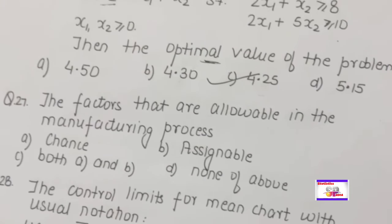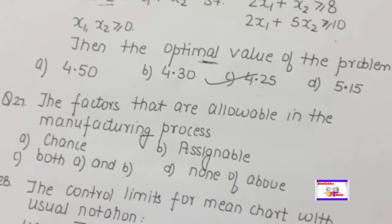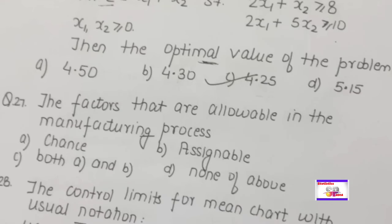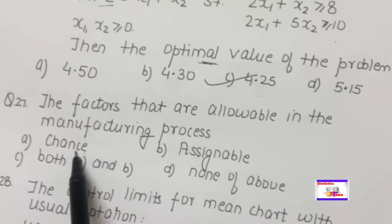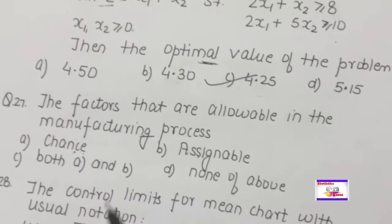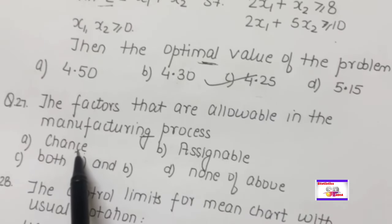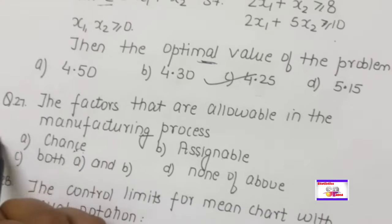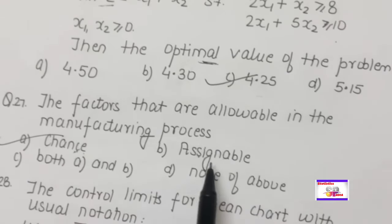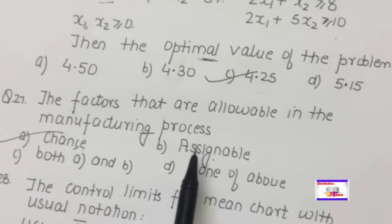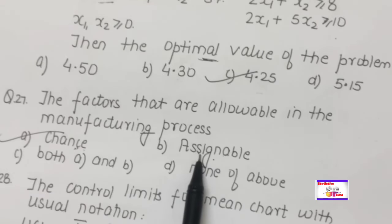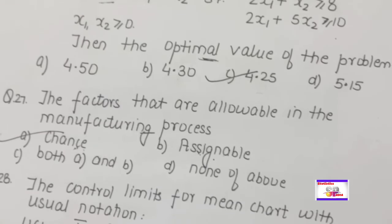In Statistical Quality Control (SQC), factors allowable in manufacturing processes involve two causes of variation: chance causes and assignable causes. Chance causes are random causes of variation — even if present, the process remains in statistical control. Assignable causes (e.g., defective raw materials, unskilled operator) are dangerous signals — if present, the process is out of statistical control.